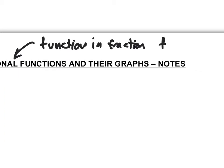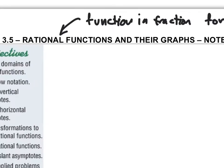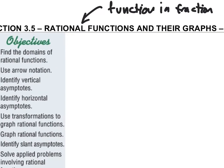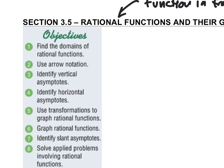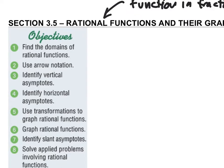These are some interesting graphs — a little bit difficult, but if you know what you're doing, it's really not too bad. The first thing I want to talk about is the domains of rational functions. But before I do that, I have to talk about vertical asymptotes, because vertical asymptotes are correlated with domains of rational functions.